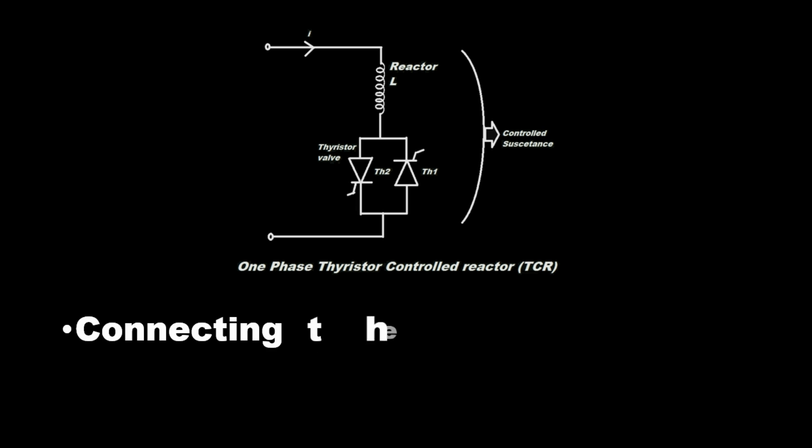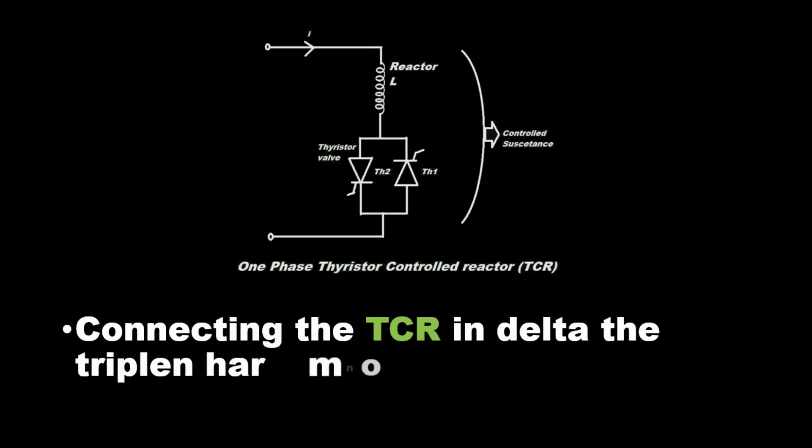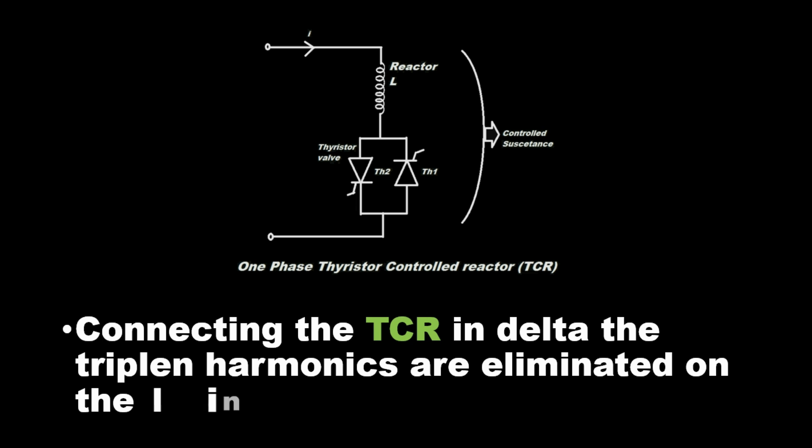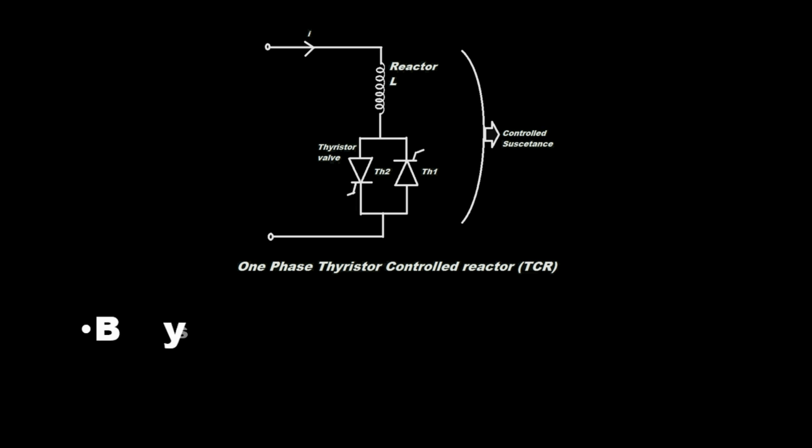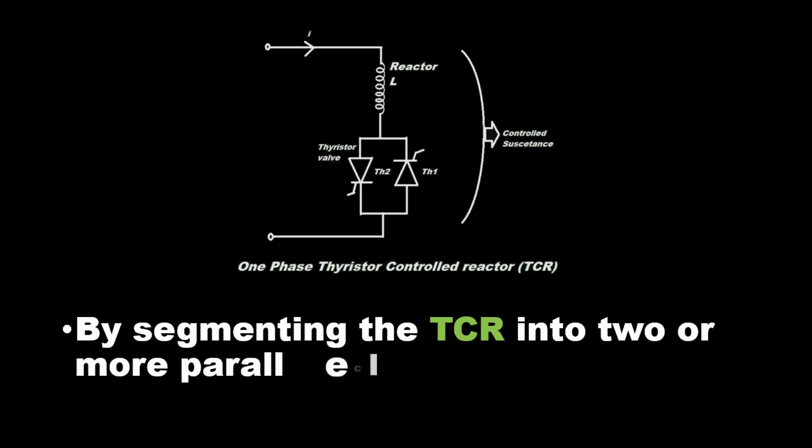Connecting the TCR in delta, the triplin harmonics are eliminated on the line side. By segmenting the TCR into two or more parallel connected branches, the harmonics can be reduced.